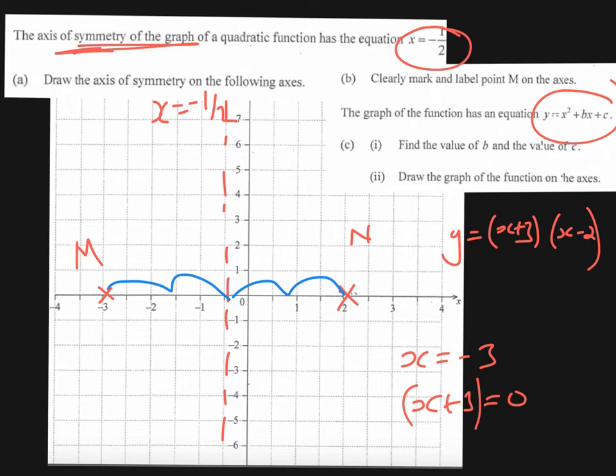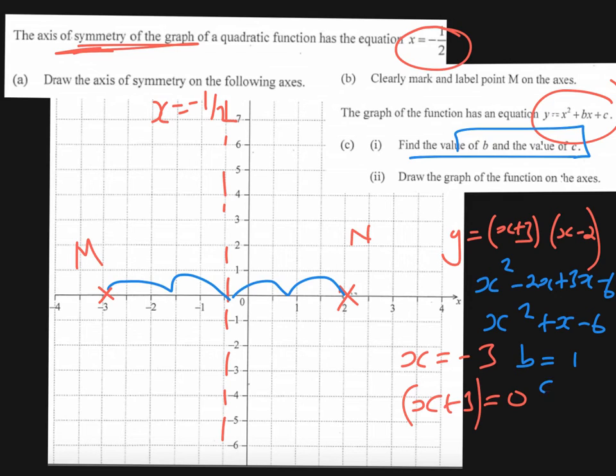That's how we get from the intercepts to intercept form, but we need it in standard form, so therefore we have to expand. If we expand this, we are going to get x squared minus 2x plus 3x minus 6, which is going to give us x squared plus x minus 6. So the value of b and c, therefore b is equal to 1 and c is equal to -6.